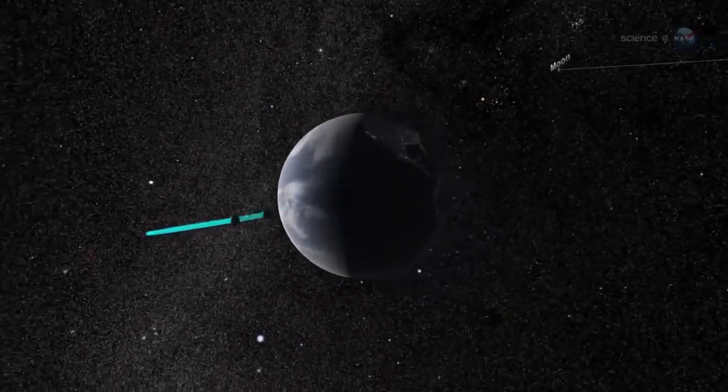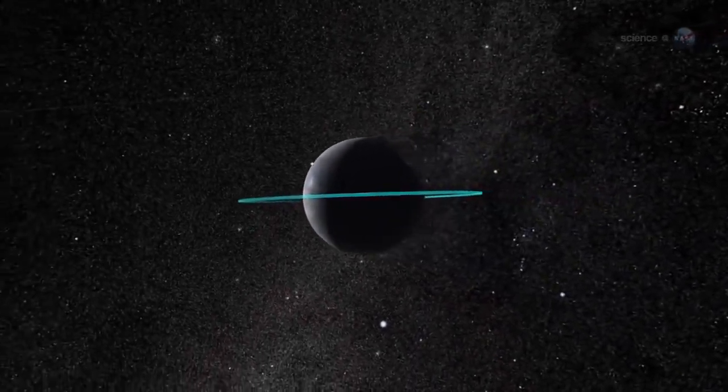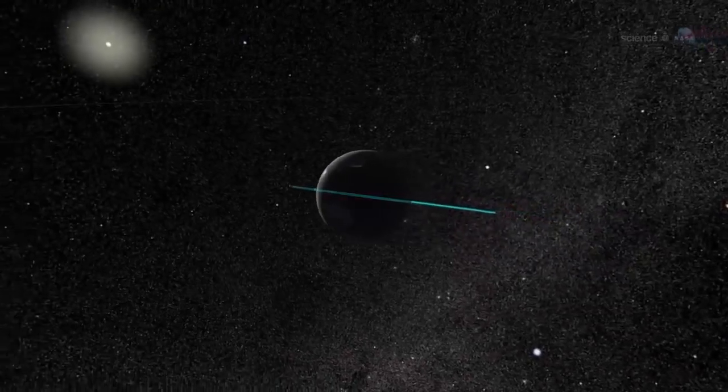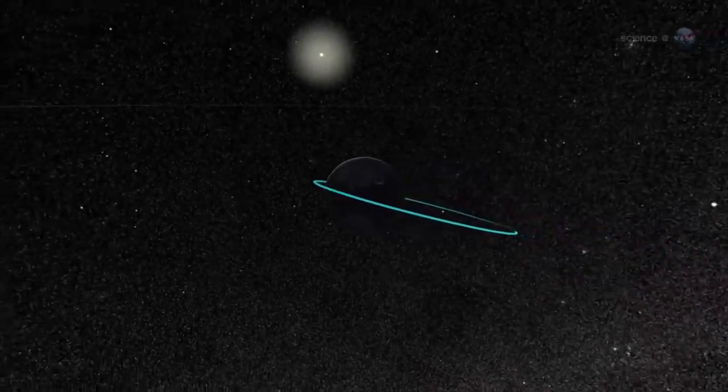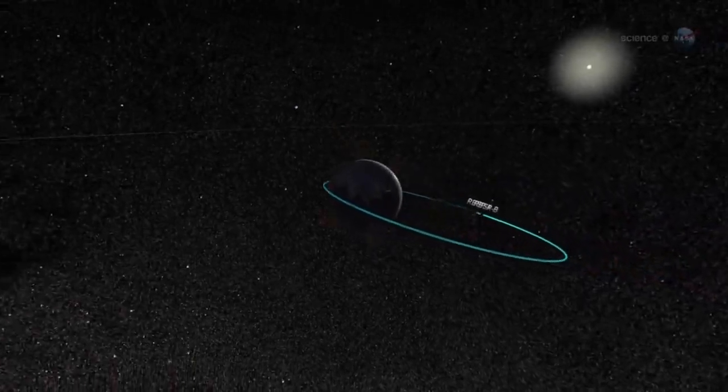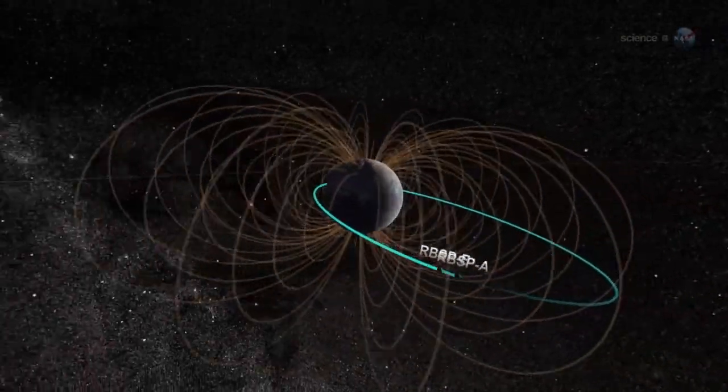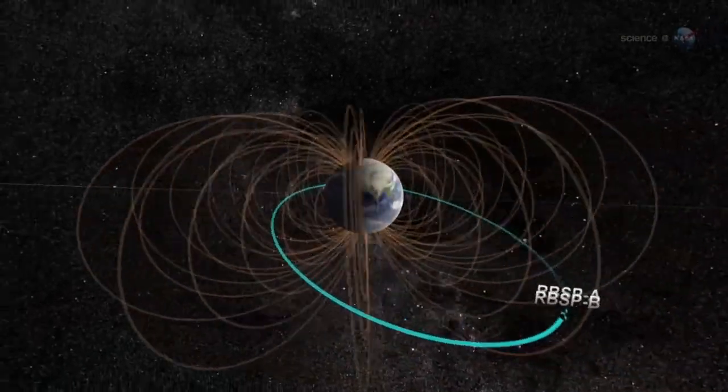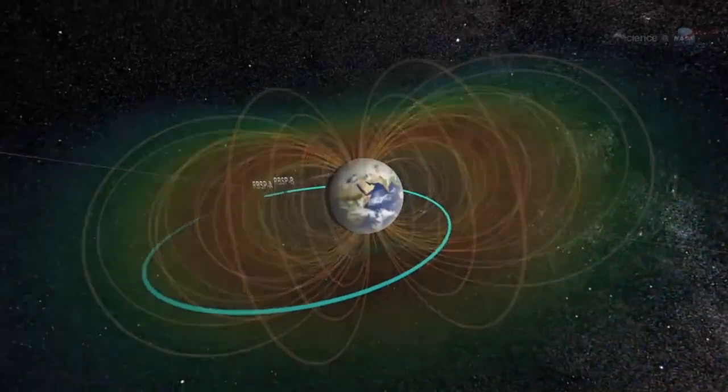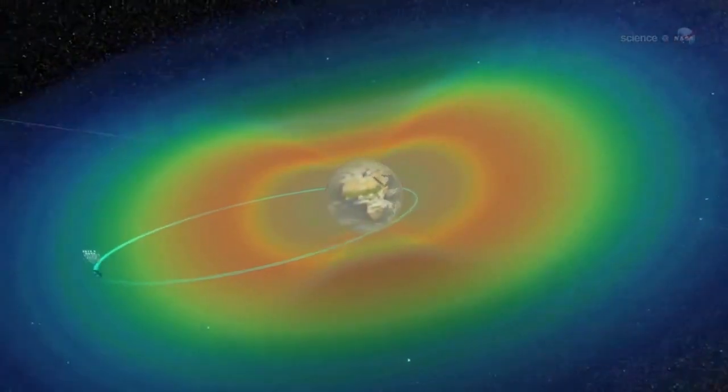One of the things we noticed right away is how clear the chorus sounds in the recording, notes Kletzing. That's because our data is sampled at 16 bits, the same as a CD, which has not been done before in the radiation belts. This makes the data very high quality and shows that our instrument is very, very healthy.